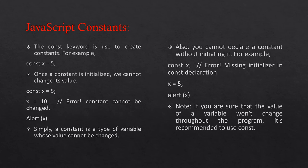Once a constant is initialized, we cannot change its value. For example: const x = 5; x = 10; alert(x) will show an error. Simply put, a constant is a type of variable whose value cannot be changed. Also, you cannot declare a constant without initializing it.